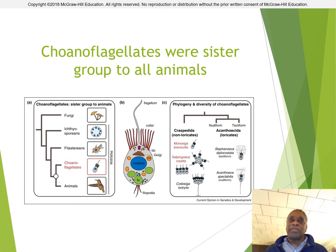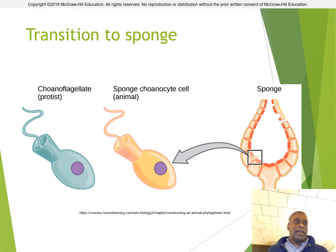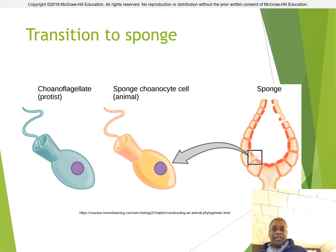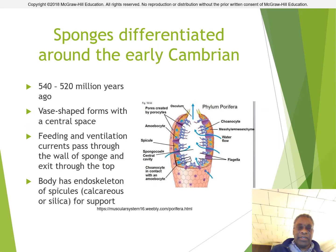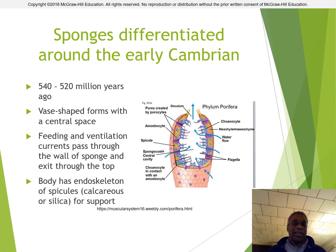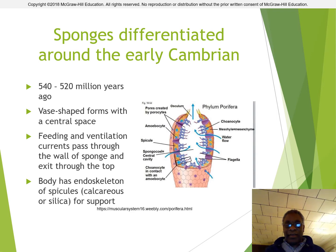The way we look at choanoflagellates now is to show their similarity to sponges. It's a very clear transition: you had a choanoflagellate existing as a single individual or as a loose colony, and you can look at the structure inside a choanoflagellate and compare it to the inside of a sponge. Sponges have specialized cells called choanocytes that have an almost identical structure to that of an actual choanoflagellate, showing a very clear relationship and ancestry. Sponges differentiated amongst other life forms somewhere in the early Cambrian period, probably between 540 and 520 million years ago, taking these vase-shaped forms with a central space, evolved to be almost like a highly evolved choanoflagellate colony.